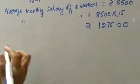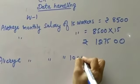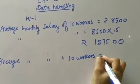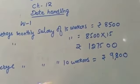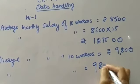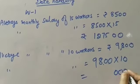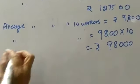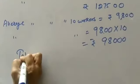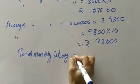Average salary of 10 workers is rupees 9800. So for all 10 workers, multiply 9800 by 10, which equals 98,000. Now, find the total monthly salary. Add both: 127,500 plus 98,000.